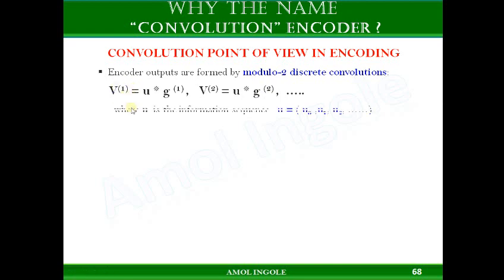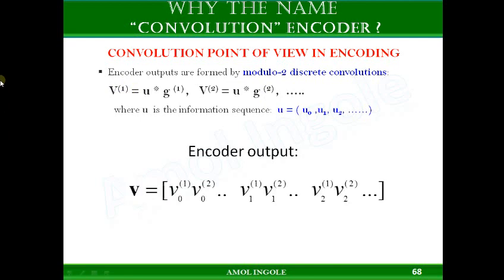The final output can be obtained using this equation. We have to consider one bit each from v1 and v2 — first bit of v1, that is v1[0], then first bit of v2, that is v2[0], then second bit of v1, and so on. Writing it like this gives you the encoded output for the encoder.